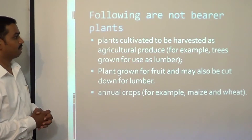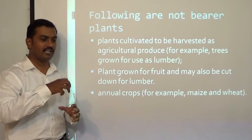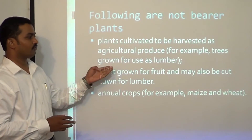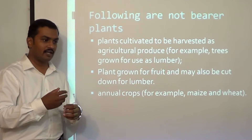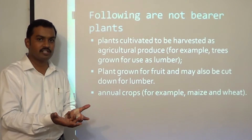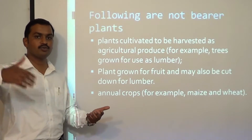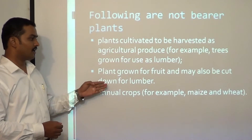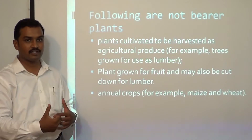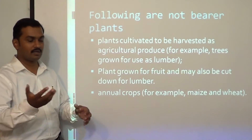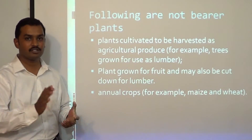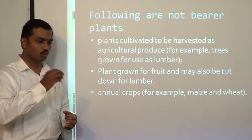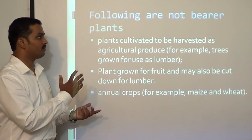Following are not bearer plants: plants cultivated to be harvested as agricultural produce — for example, trees grown for lumber or to be cut down and sold as firewood. The only purpose is to cut it down, so it is not a bearer plant but a biological asset. Also, plants grown for both fruit and firewood that can be cut down and sold as agricultural produce are not bearer plants. Annual crops like maize and wheat grown for harvesting and selling are also not bearer plants.